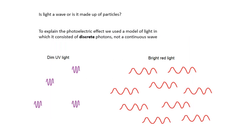Is light a wave or is it made up of particles? This has been a scientific argument for a long time. Isaac Newton was convinced that light was made up of particles. People like Thomas Young, Christian Huygens and others thought it was continuous waves.